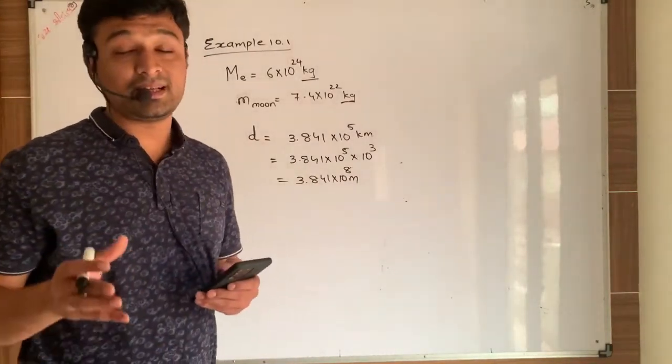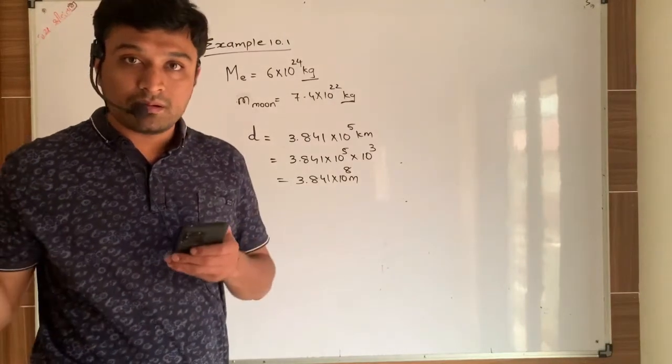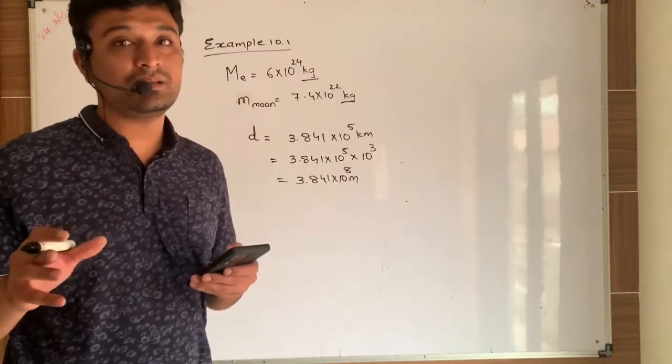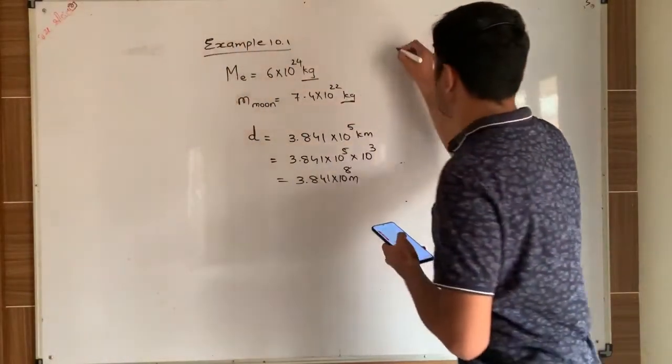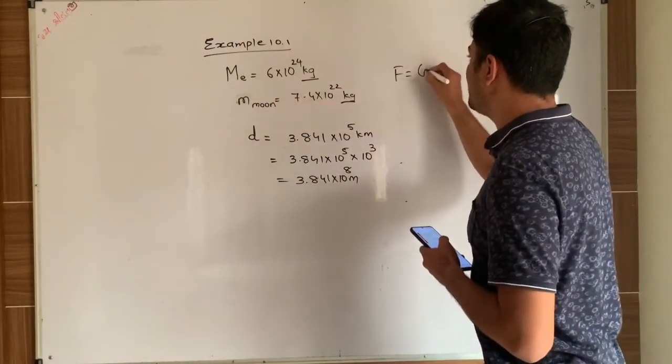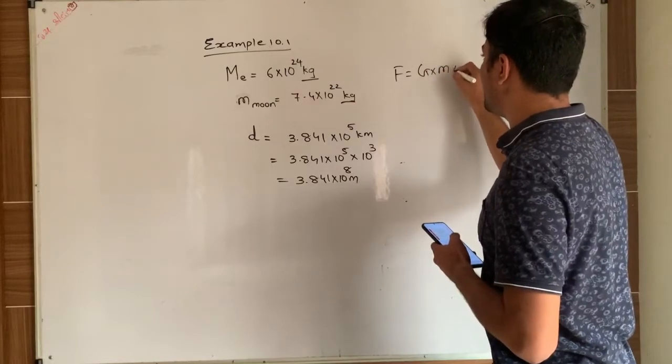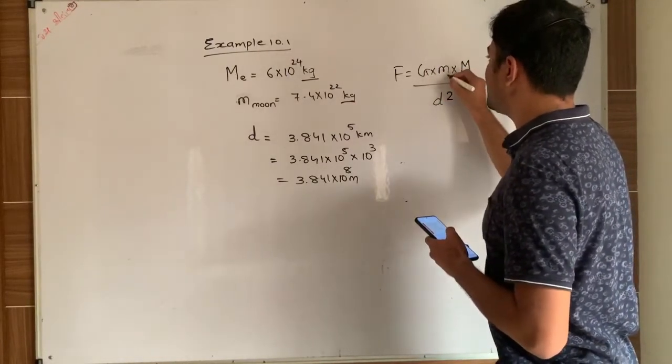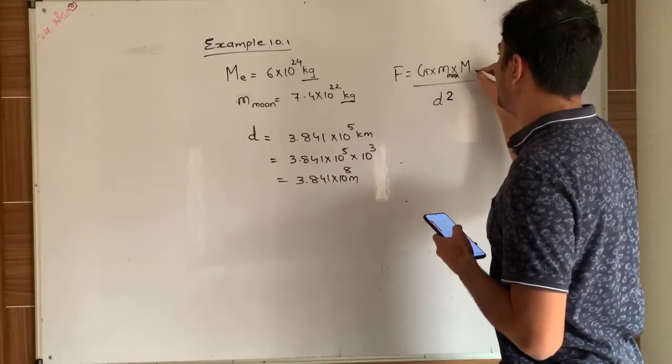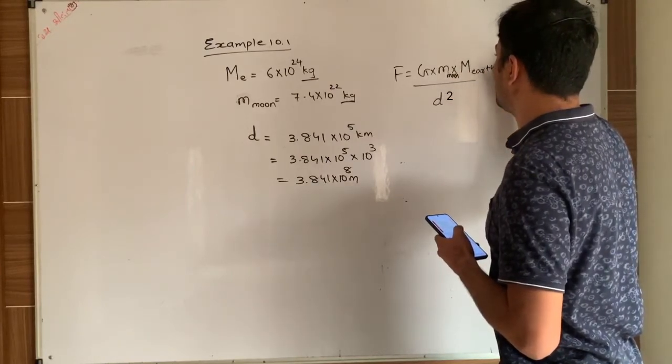Now we can find the force that is existing between moon and earth using the formula of universal law of gravitation. What was the formula? Formula is F is equal to G into small m into capital M upon D square. Here small m means mass of moon while capital M means mass of earth.